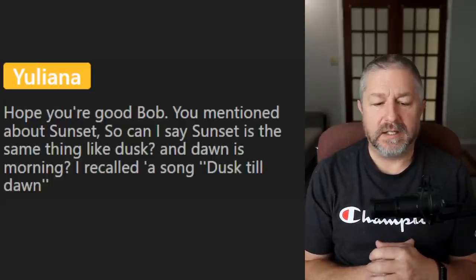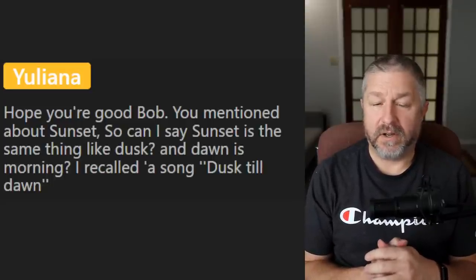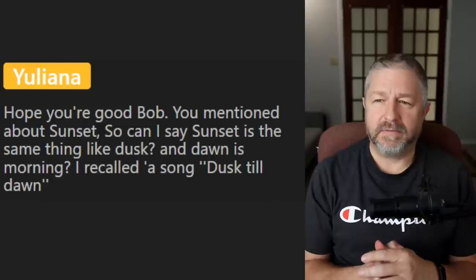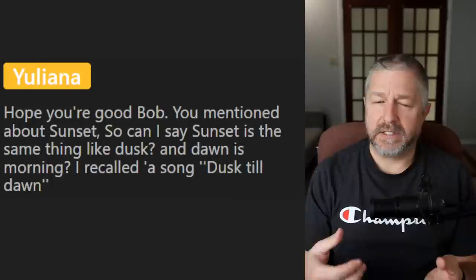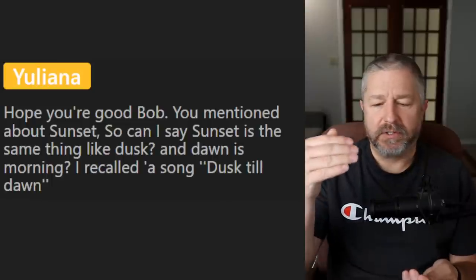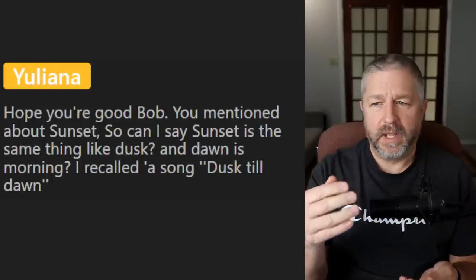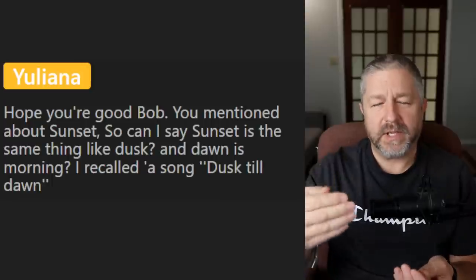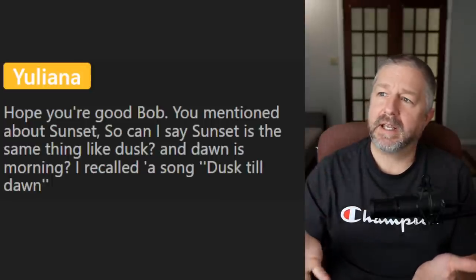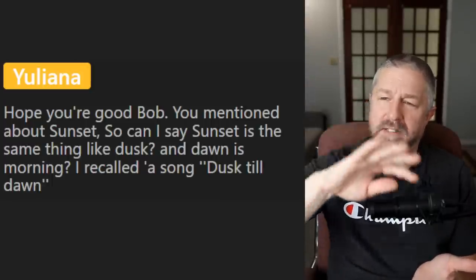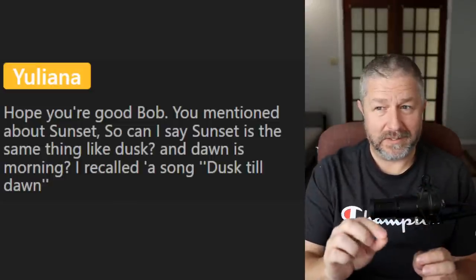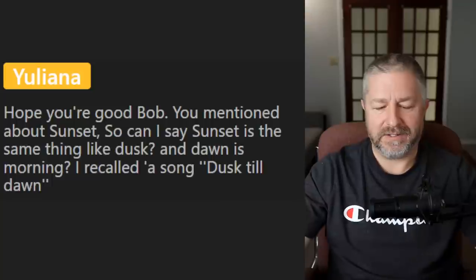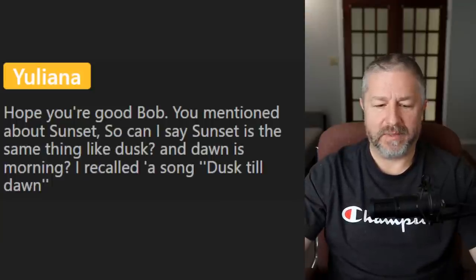A viewer asks: is sunset the same thing as dusk, and is dawn the morning? Dusk is the time of day right after the sun sets until it gets completely dark. The sun goes down, but you can still see sunlight somehow — from when the sun disappears until it gets dark, we would call that dusk.